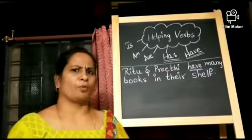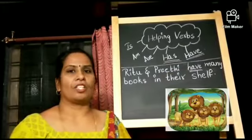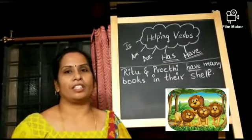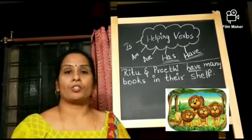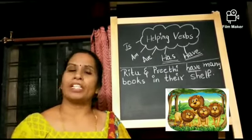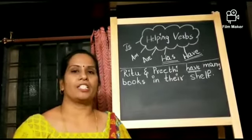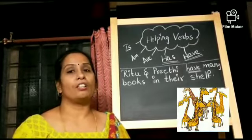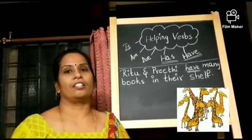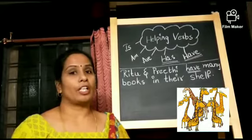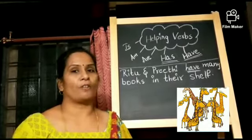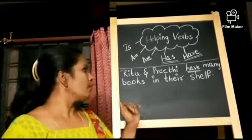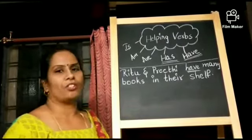Let's see a few more examples children. Lions have sharp teeth. We are talking about many lions, not one lion, many lions. Giraffes have long neck. We are talking about many giraffes.